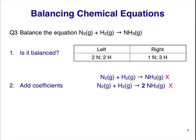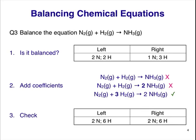Clearly, to get six H atoms on the left, I can add a coefficient of 3 before the H2. Our final equation has two N on the left and right, and six H on the left and right. Success.